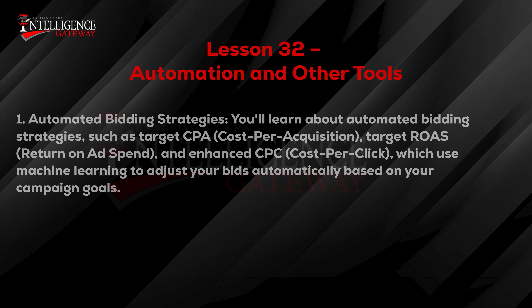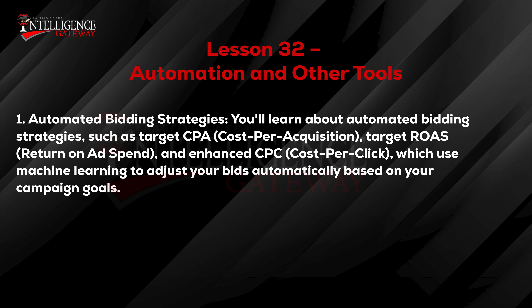1. Automated Bidding Strategies. You'll learn about automated bidding strategies, such as target CPA (cost-per-acquisition), target ROAS (return-on-ad-spend), and enhanced CPC (cost-per-click), which use machine learning to adjust your bids automatically based on your campaign goals.